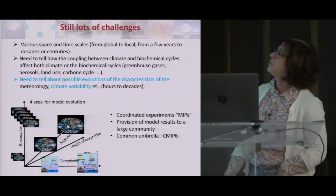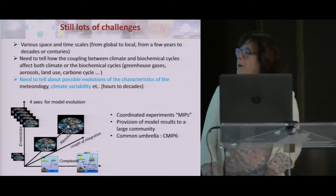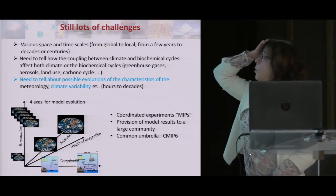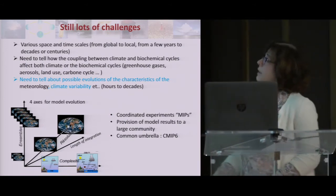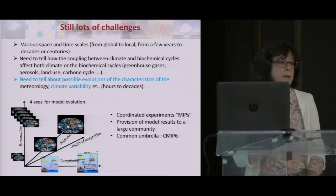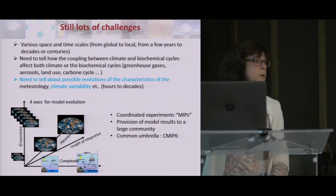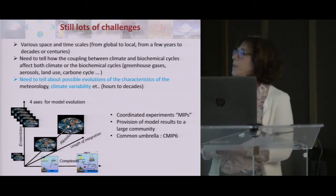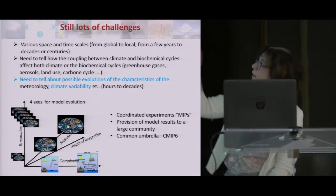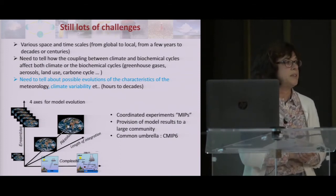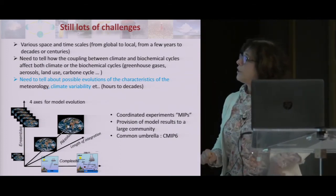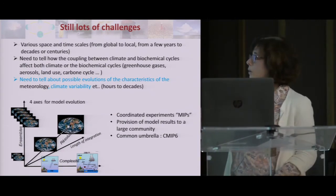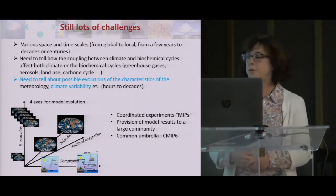We still have lots of challenges with our simulations. Are we sure we can represent scale interactions properly from global to local, and from a few years to millennia and more? We want to know more about this coupling between climate and biogeochemical cycles. We know that vegetation has changed in the past, so if you do not have this in your model when you want to project, something is wrong. We also want linkages between meteorology and climate change.